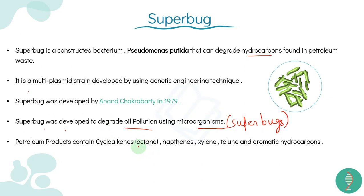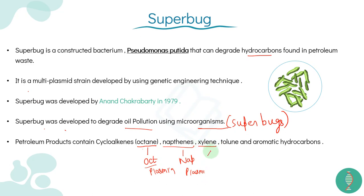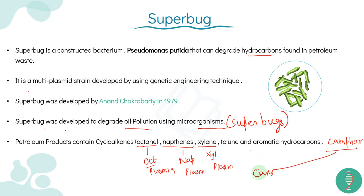The petroleum products involved were: first, octane — degraded by the OCT plasmid; second, naphthalene — degraded by the NAP plasmid; third, xylene — degraded by the XYL plasmid; and fourth, camphor — which is a petroleum waste degraded by the CAM plasmid.